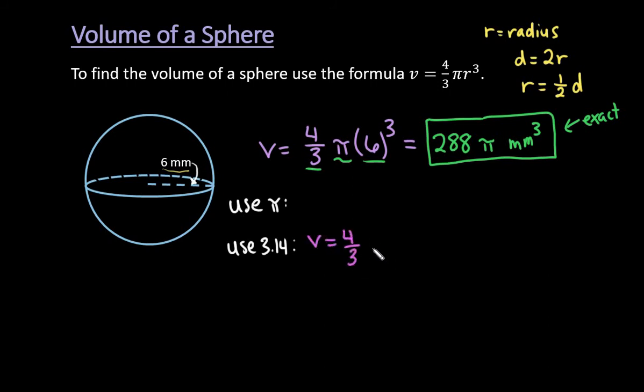For this one, we would just do four-thirds times 3.14 times six cubed, and you would just plug that into your calculator, and any calculator will allow you to do that. When you use 3.14, you end up with approximately 904.32 millimeters cubed.